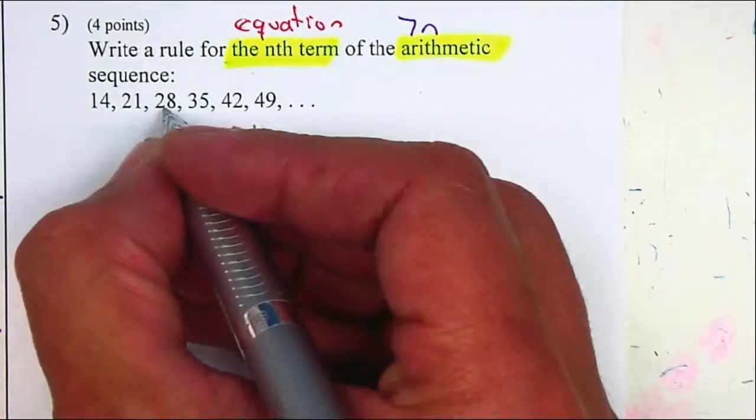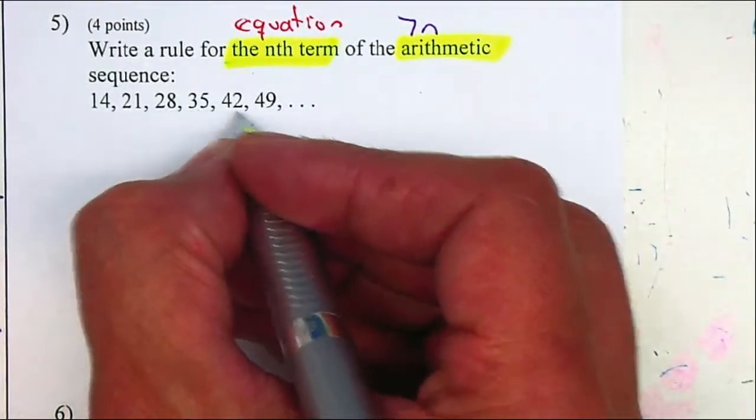Right? What do I need to add to 28 to get to 35? 7 and 7 and 7.